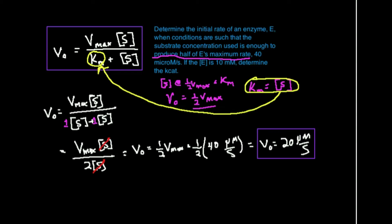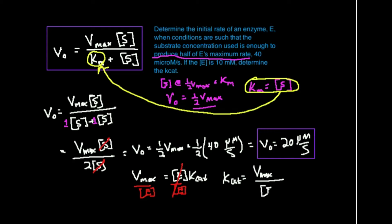For the second part: if the concentration of enzyme is 10 millimolar, determine the Kcat. The way you go about this is you recognize that the Vmax of the enzyme is equal to the concentration of the enzyme times the Kcat. The Kcat is a rate constant — it's also called the turnover number. To find the Kcat, divide both sides by the concentration of the enzyme. So Kcat equals Vmax divided by the total concentration of the enzyme, sometimes denoted with a subscript T.